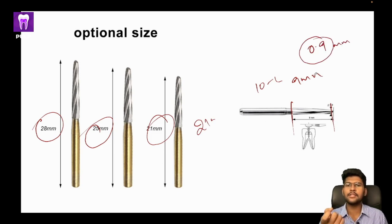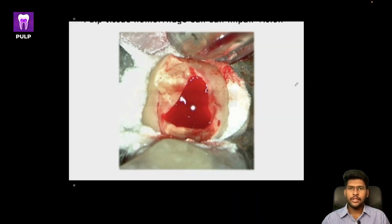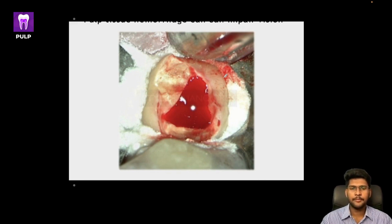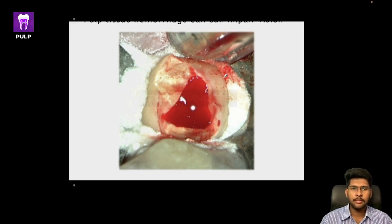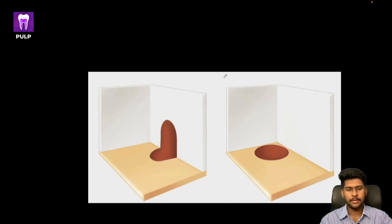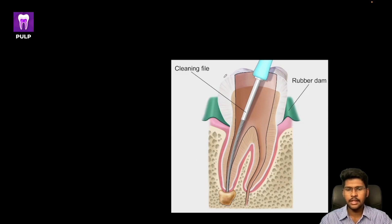Once you open your pulp chamber, it won't look like a clean textbook diagram — you'll see a pool of blood from the pulp and canals. To control this bleeding, use a cotton pellet soaked in sodium hypochlorite and apply pressure to control hemorrhage and get a clear vision. This is the mouse hole effect. Remember that canals are placed at the junction of the wall and floor of the pulp chamber. We will discuss cleaning and shaping in detail in the next session.